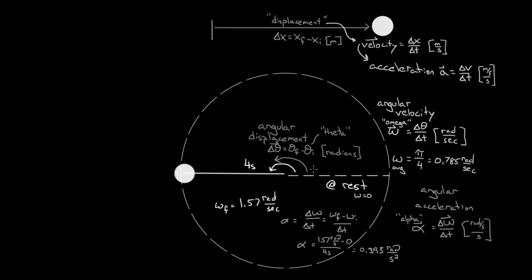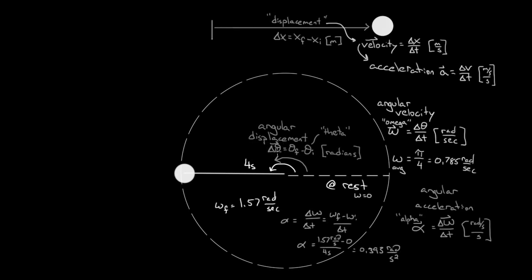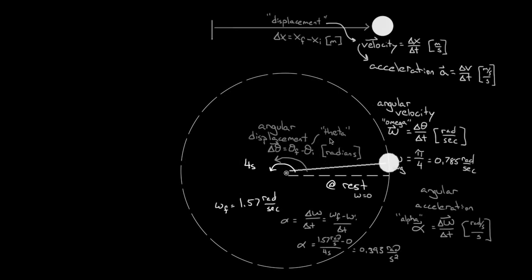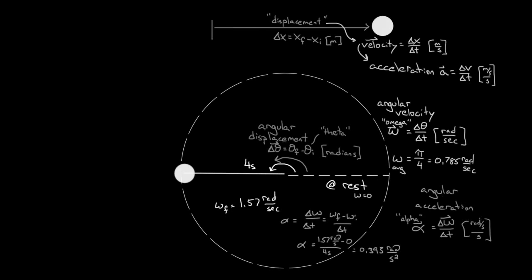So in this example, the angular displacement was pi radians, the average angular velocity was 0.785 radians per second, the initial angular velocity was zero, the final angular velocity was 1.57, and the angular acceleration was 0.393 radians per second squared. Recapping: angular displacement represents the angle through which an object has rotated, measured in radians, represented with delta theta. Angular velocity represents the rate at which an object is rotating, measured in radians per second, represented with omega. Angular acceleration represents the rate at which an object is changing its angular velocity, measured in radians per second squared, represented with alpha.